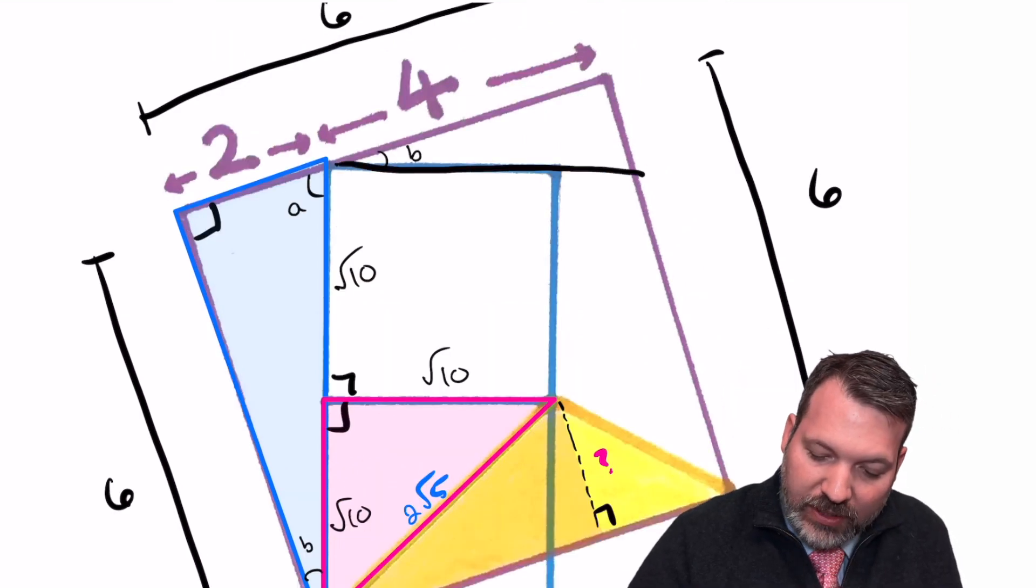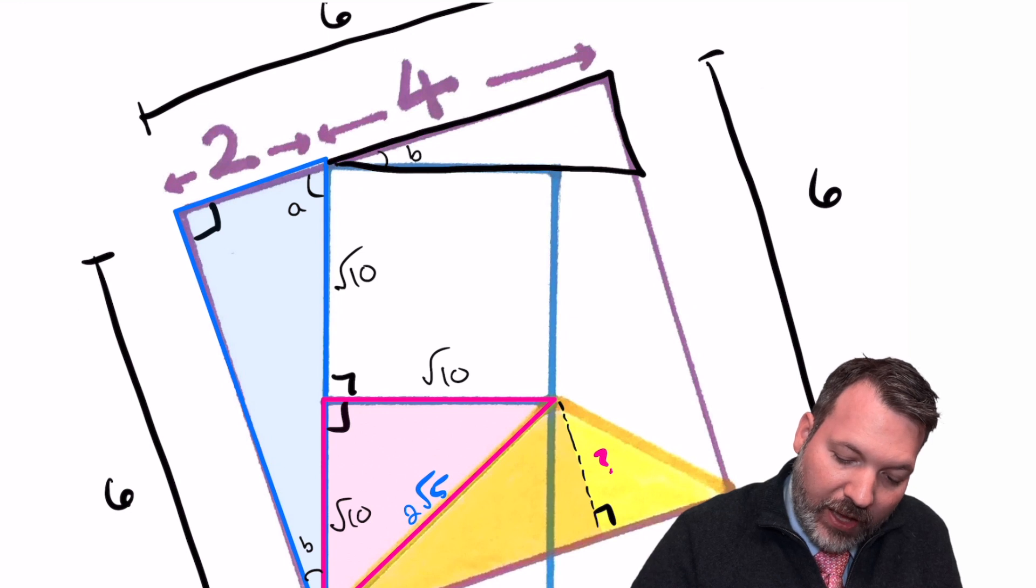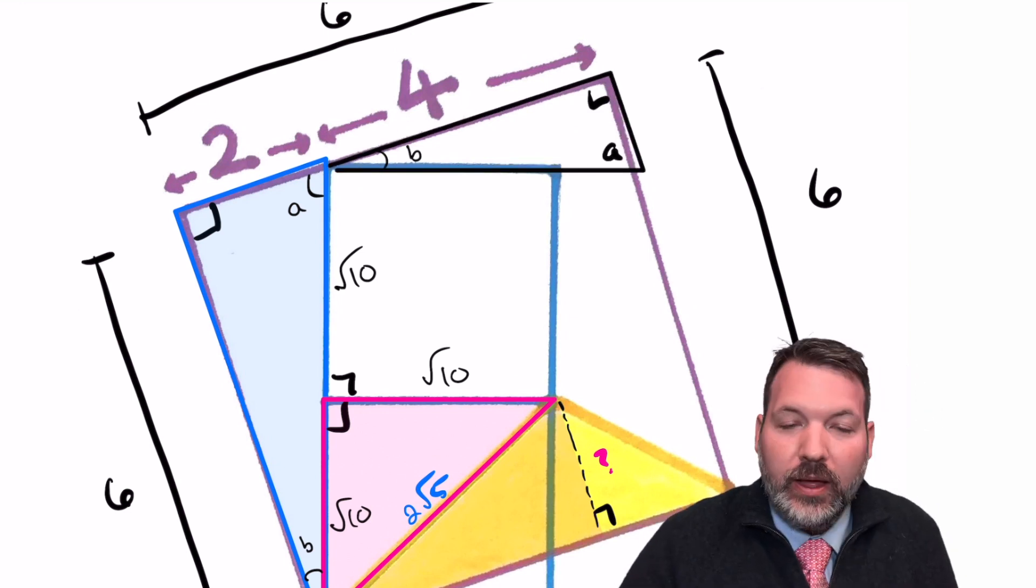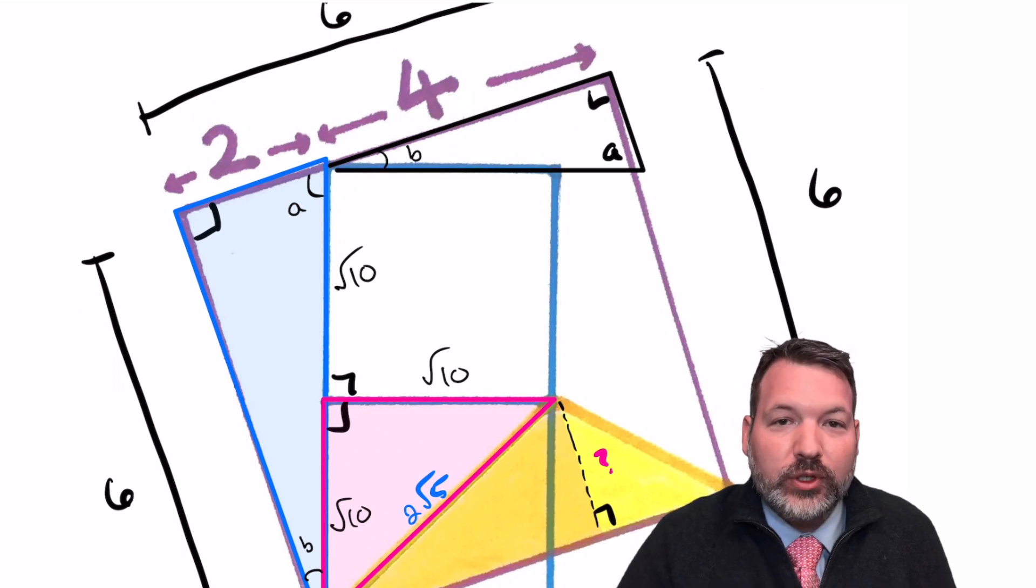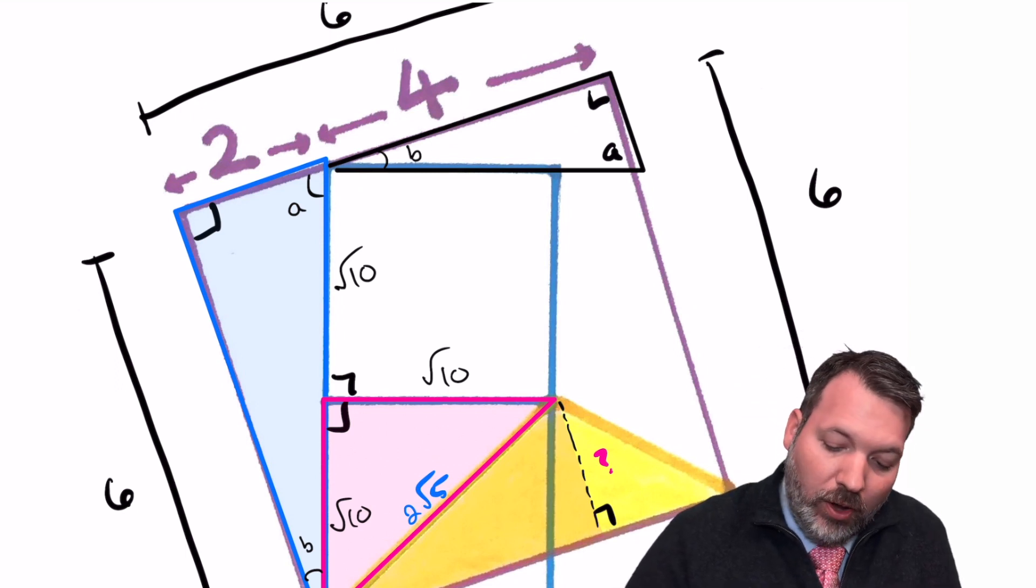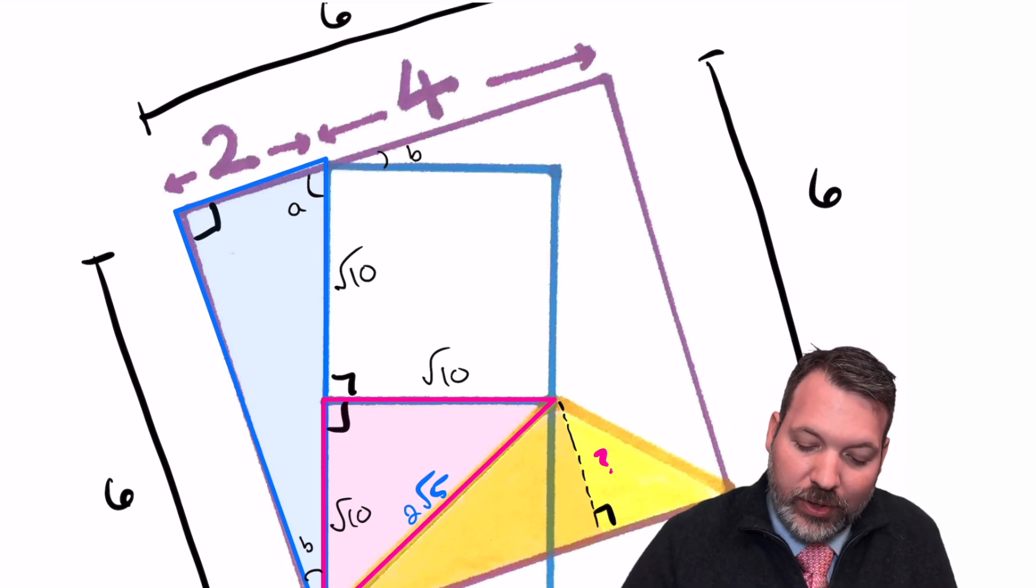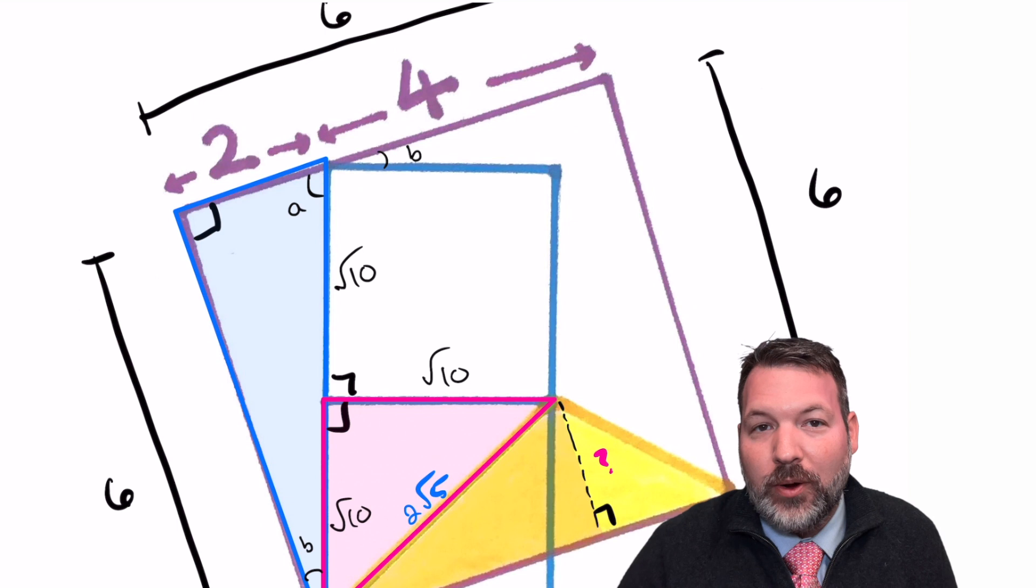So for example, if we extended out the side length along that upper smaller square, we could see that would be a right angle, that would be A, and we could leverage our proportionality to figure out what this length is, and what that length is. But that triangle isn't really anywhere near what we need. So we're not going to focus on that one.